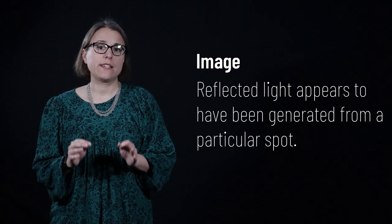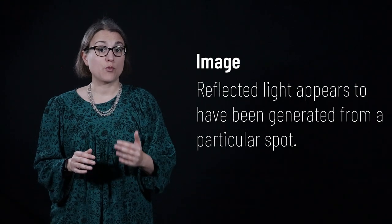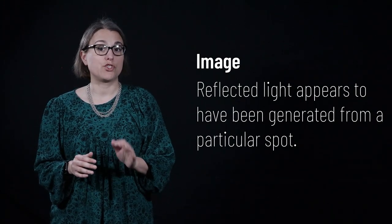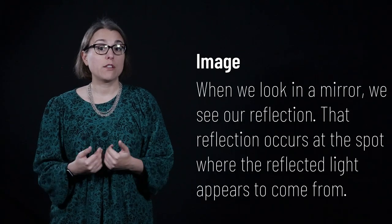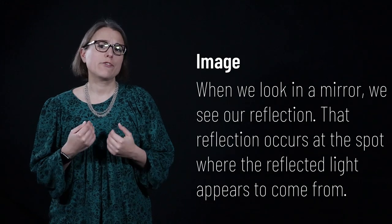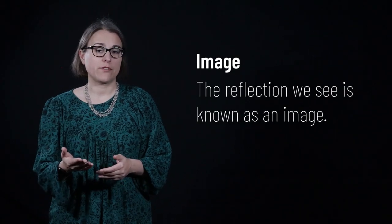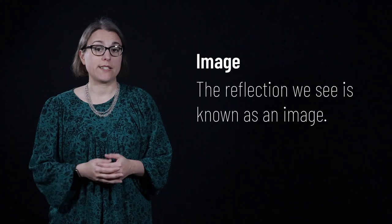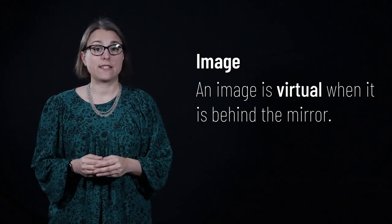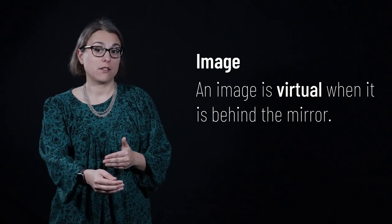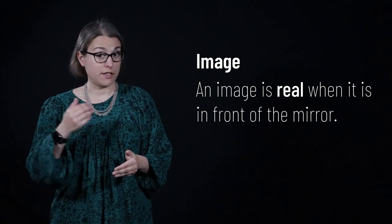Before discussing how the law of reflection explains how different types of mirrors work, let's discuss the concept of an image. When light reflects, the reflected light has properties that make it appear those light rays were generated by a particular spot. When we look in a bathroom mirror and see a reflection, that reflection occurs at a point where the reflected rays appear to have been generated — this is known as an image. When looking through mirrors, an image is said to be virtual when it is behind the mirror, and real when it is in front of the mirror.